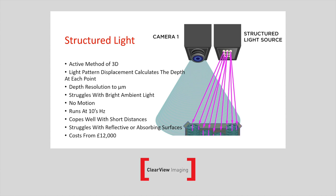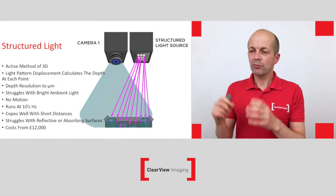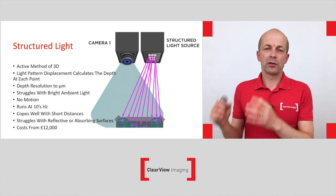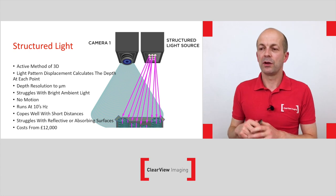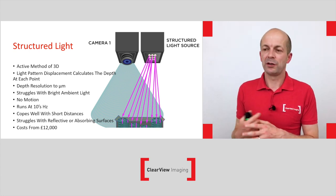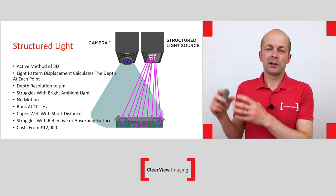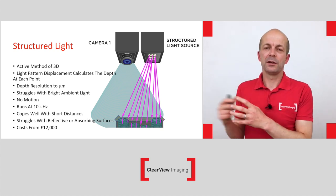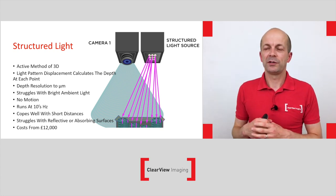The system typically moves that pattern around while the camera acquires images to build up a depth map and get a really nice 3D image. Depth resolution is down to micron levels — highly accurate — but because of the light source, very bright ambient light may cause it to struggle. It's a fixed, no-motion type setup.